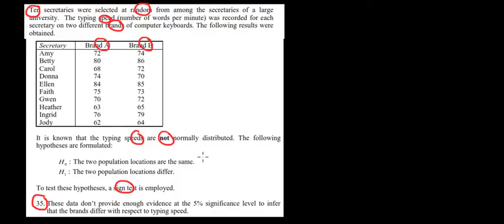We have to perform the sign test and give the conclusion whether the difference in speed between brand A and brand B is significant or not. Why do we use a sign test here? Because we do not have a normal distribution, we're not interested in the actual averages — the average is not going to be an accurate estimate of what we're trying to test. So we're testing whether the distributions are similar or not between brand A and brand B.